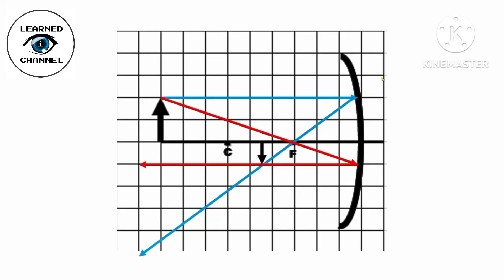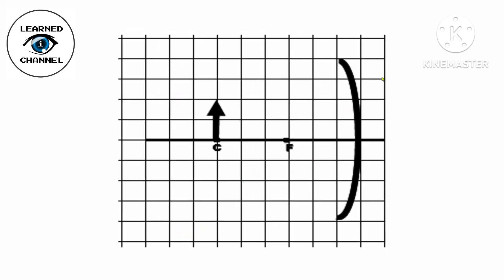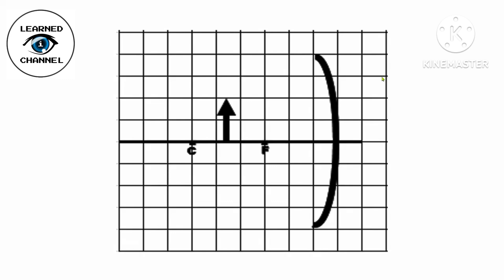C and F, which is inverted, reduced, and real. Next, what if the object is at C? The image formed is at C also, which is inverted, has the same size and shape, and is real. What if the object